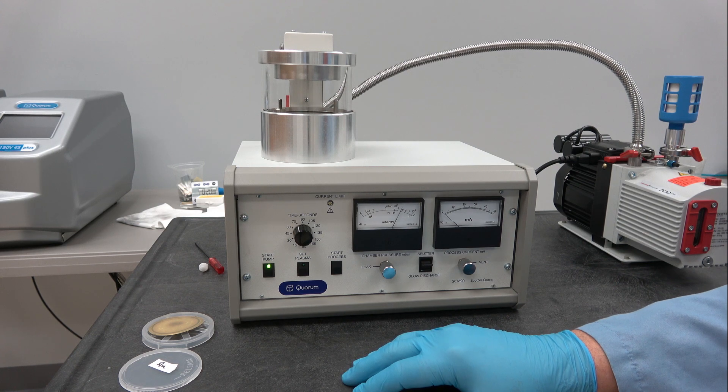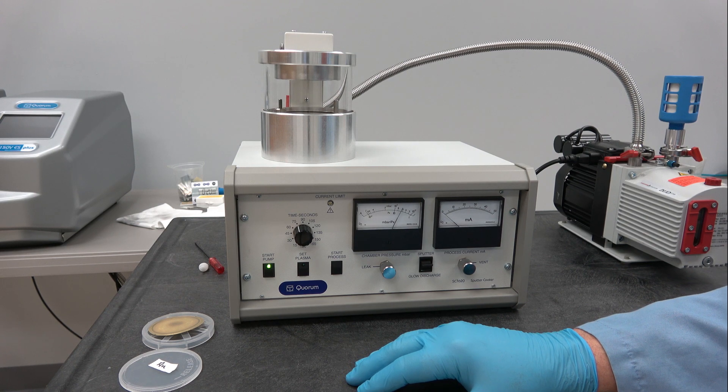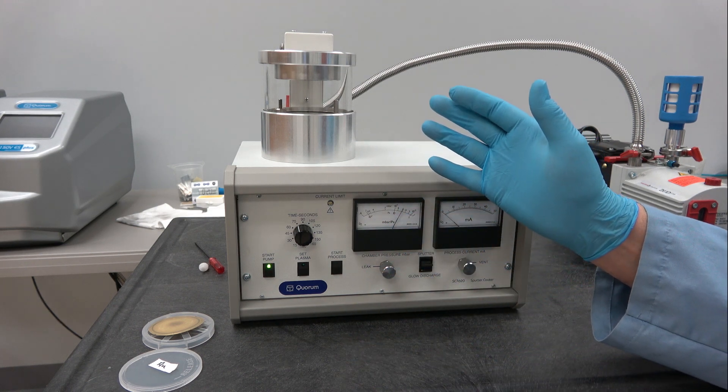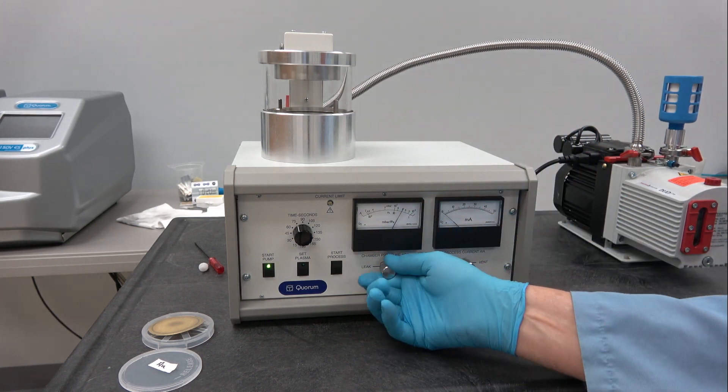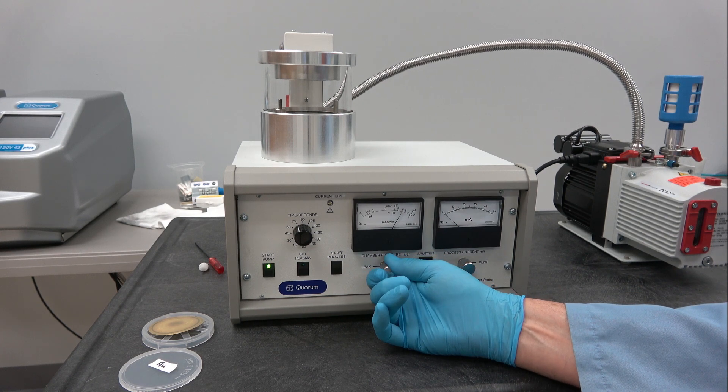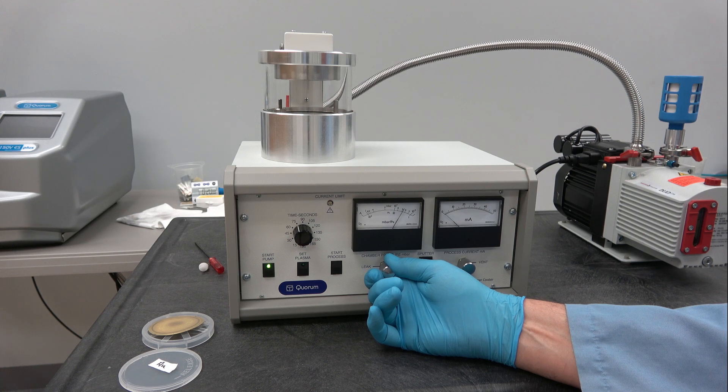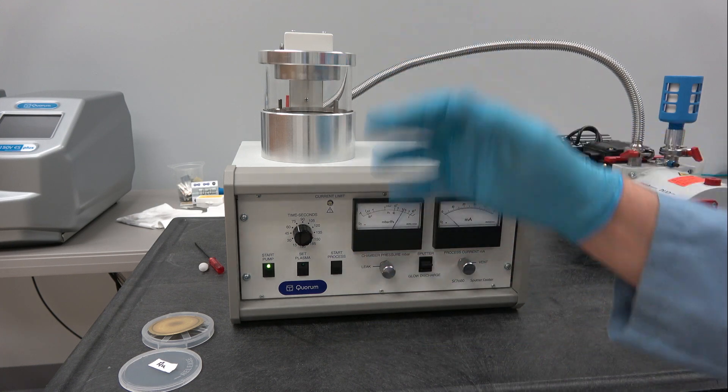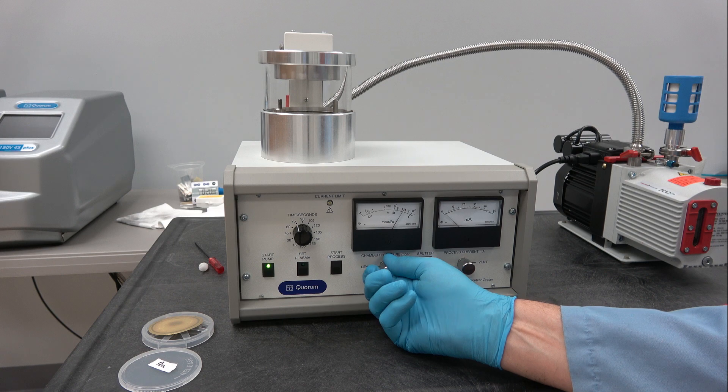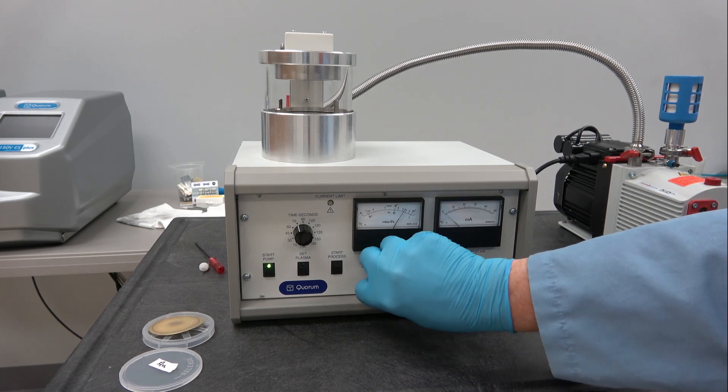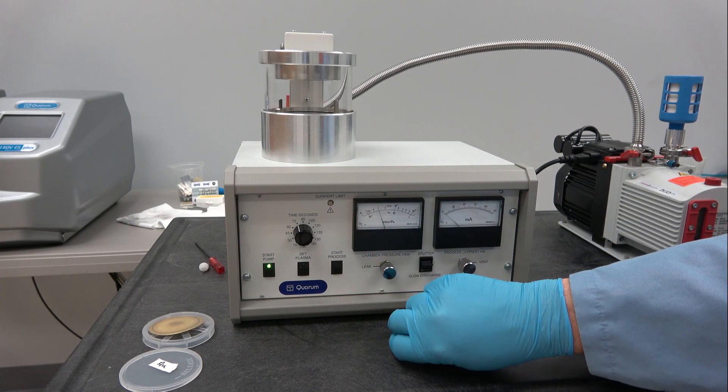Now usually what I like to do during the pumping process is I like to flush the chamber a few times before lighting a plasma. This is to drive out water vapor which is clinging to the inside, any outgassing of the chamber. This usually will improve the vacuum quite rapidly.